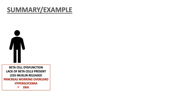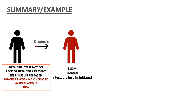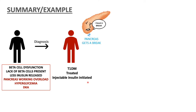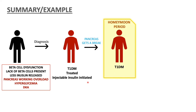Eventually, because the hyperglycemia is not being treated, this leads to diabetic ketoacidosis or DKA. The person is admitted to hospital, a diagnosis of type 1 diabetes is made, and they are started on injectable insulin. Starting injectable insulin gives the pancreas and beta cells a break and time to recover.